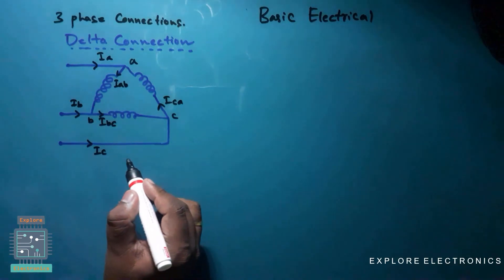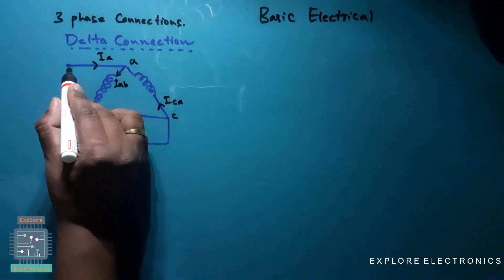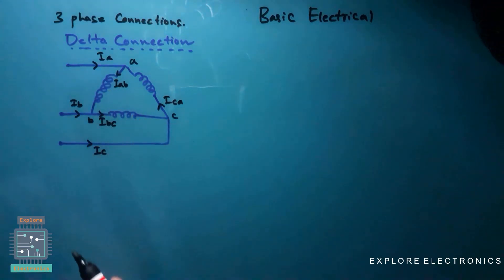So here we can see the currents, the line currents and the phase currents are different. In the star connection we have seen the currents are same but the voltages with respect to the phase and line are different.